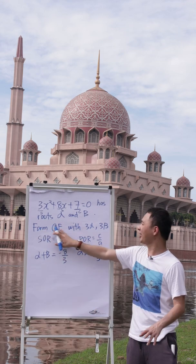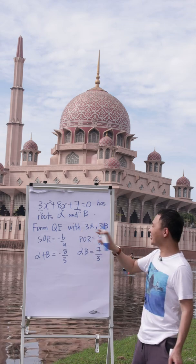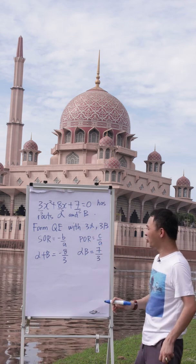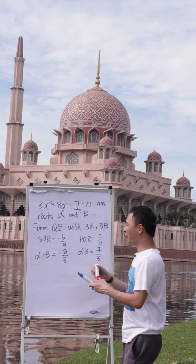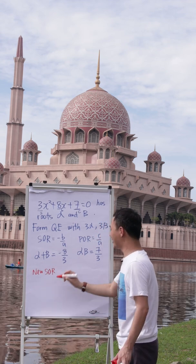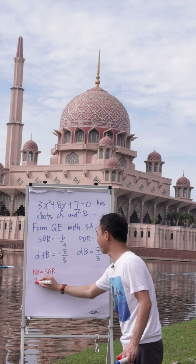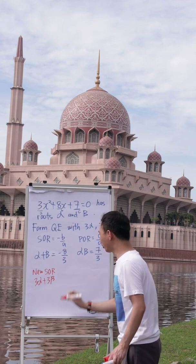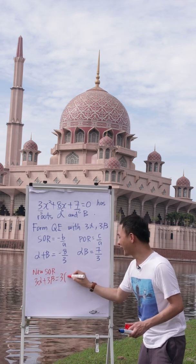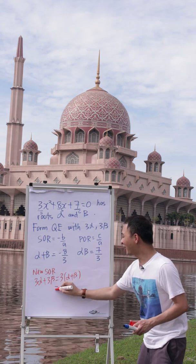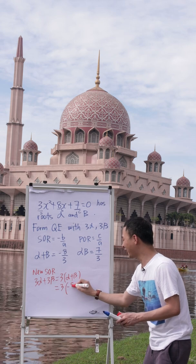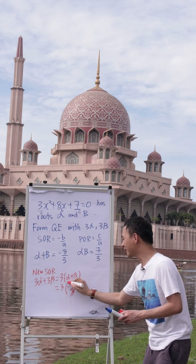The question asks you to form the quadratic equation with 3 alpha and 3 beta. This is a bit tricky because now you have new roots: 3 alpha and 3 beta. So the new sum of root is 3 alpha plus 3 beta. You can factorize out the 3, giving 3 times (alpha plus beta). Alpha plus beta is negative 8 over 3, so 3 multiplied by negative 8 over 3 equals negative 8.